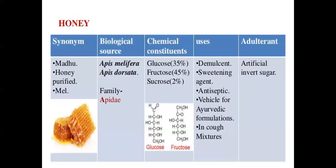Next is honey — a purified sweet sugary solution obtained from the honeycomb of Apis mellifera and Apis dorsata, family Apidae. Honey contains carbohydrates: sugars — glucose 35%, fructose 45%, and sucrose 2%. Honey is used as a demulcent, sweetening agent, antiseptic, vehicle in Ayurvedic formulations, and in cough mixtures. It also acts as an antioxidant. Artificial sugar is one substitute for honey.